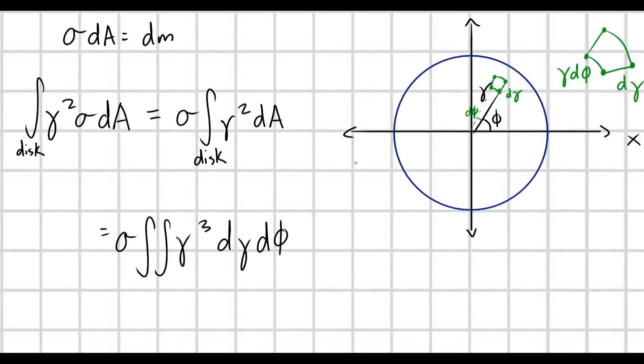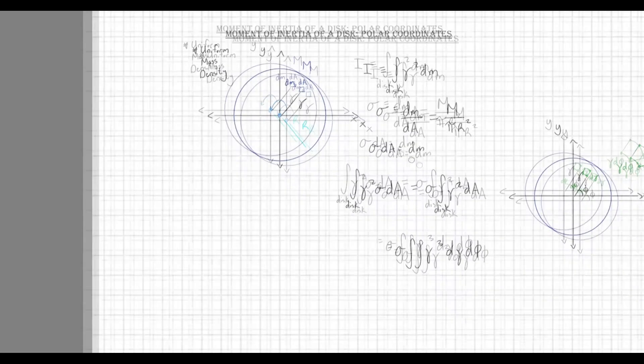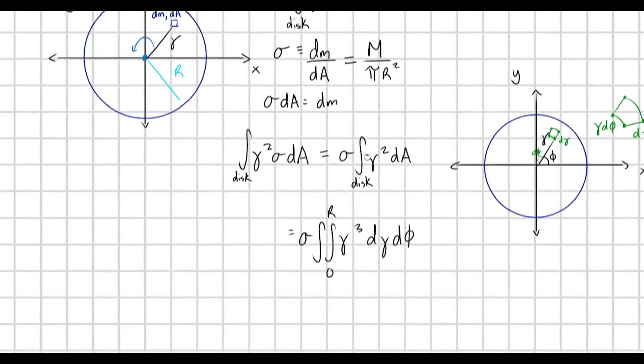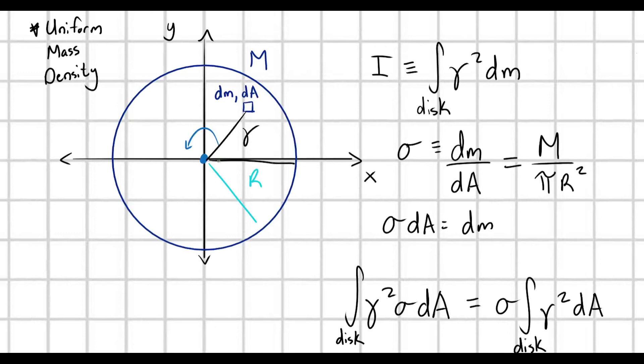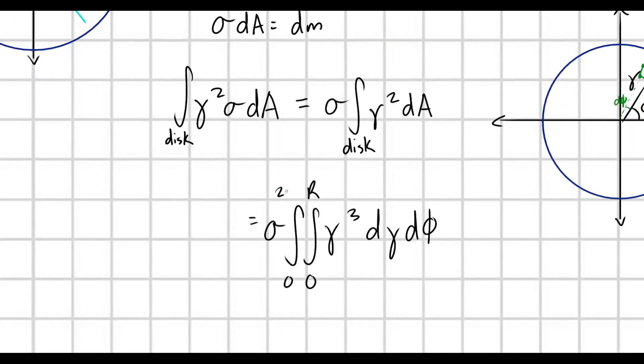So, for a disk, where is gamma going to range from? Well, we start at our origin, and we want to integrate over this entire disk. So, we're going to go from 0, a radius of 0, all the way to a radius of capital R. So, we're going to integrate this from 0 to R. And, for phi, we start at some angle of 0 radians, and to integrate over the entire disk, we're going to go from 0 to 2 pi radians. We want to go over the entire circle. So, we're going to go from 0 to 2 pi radians.